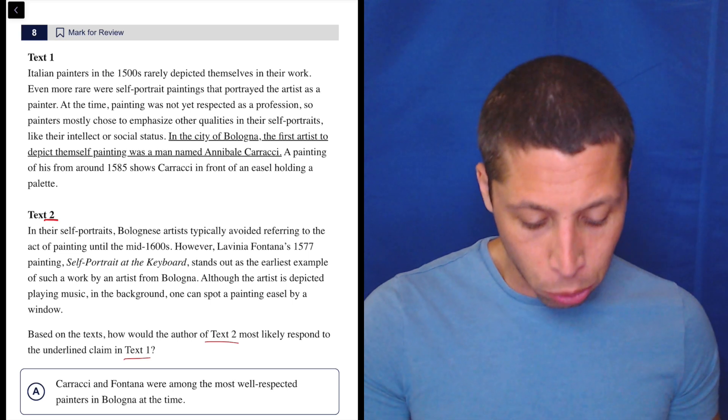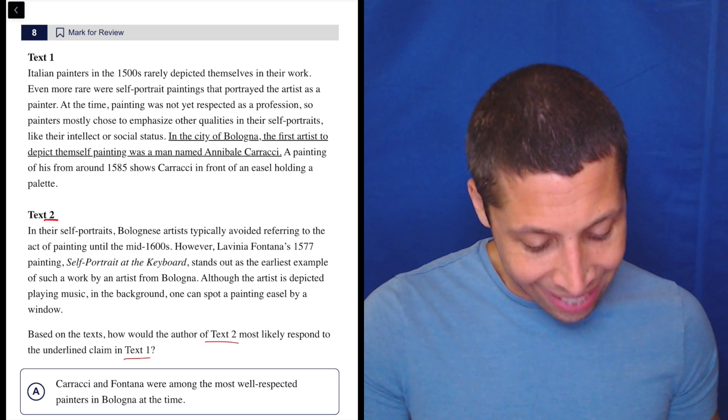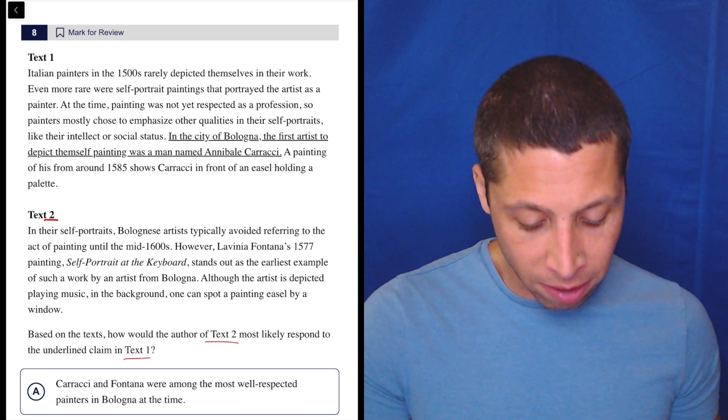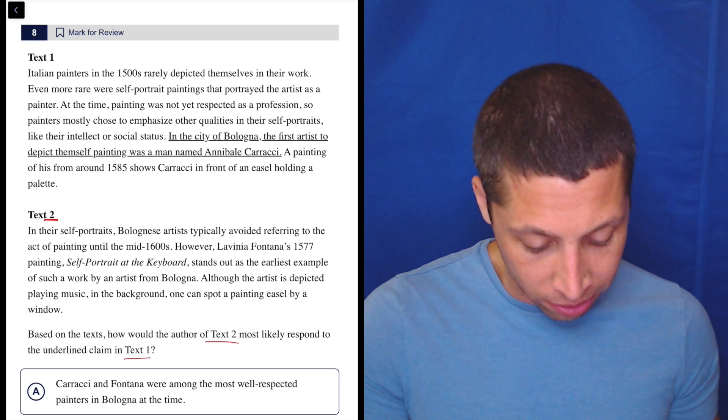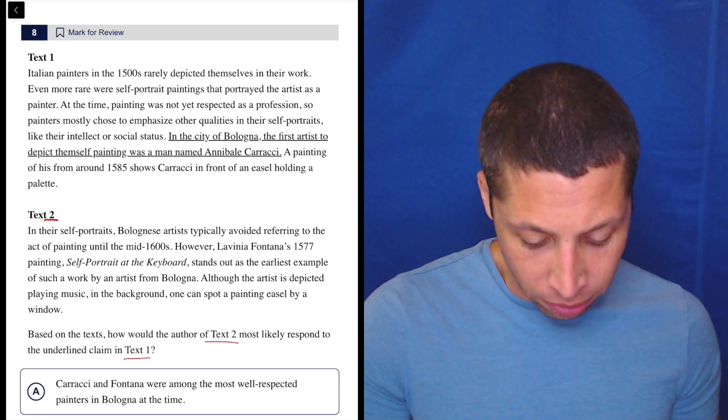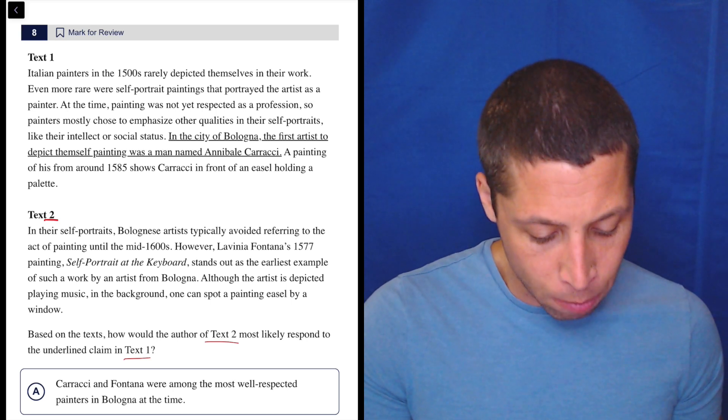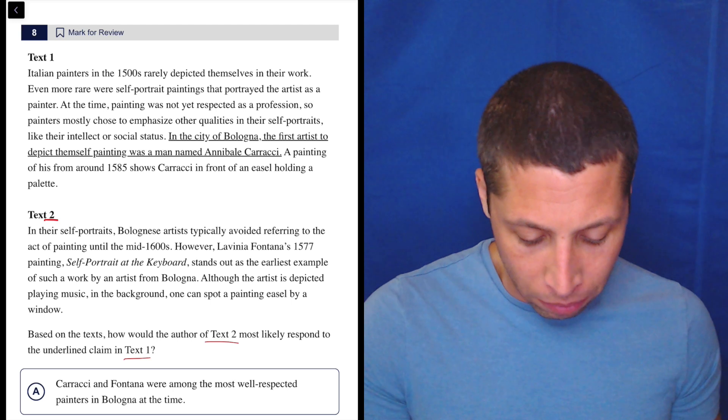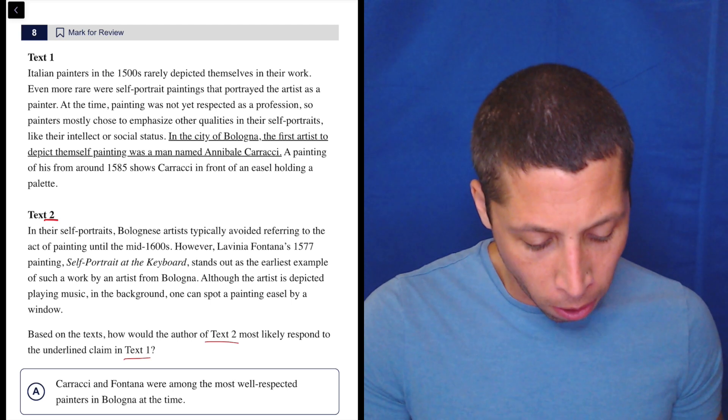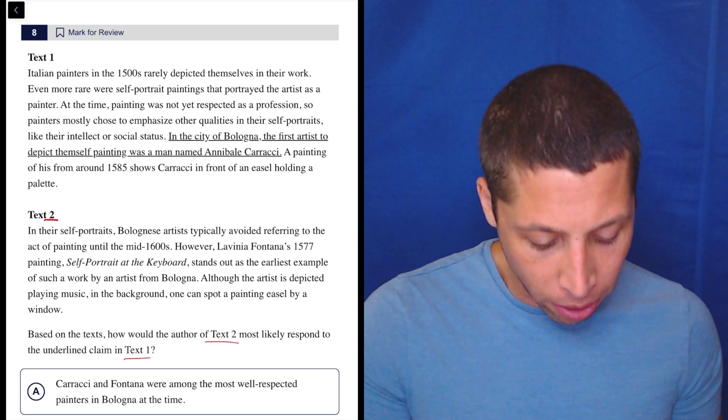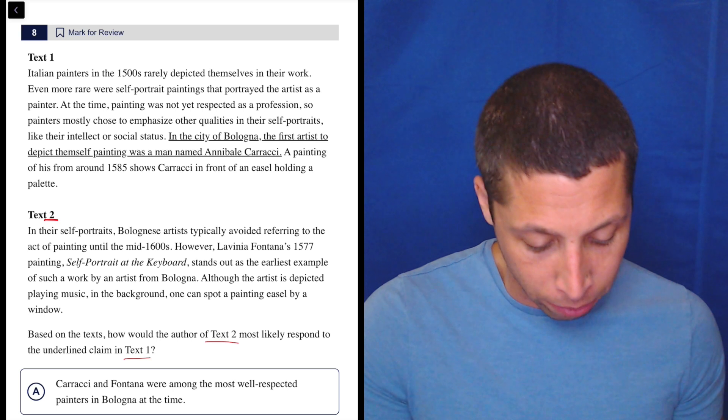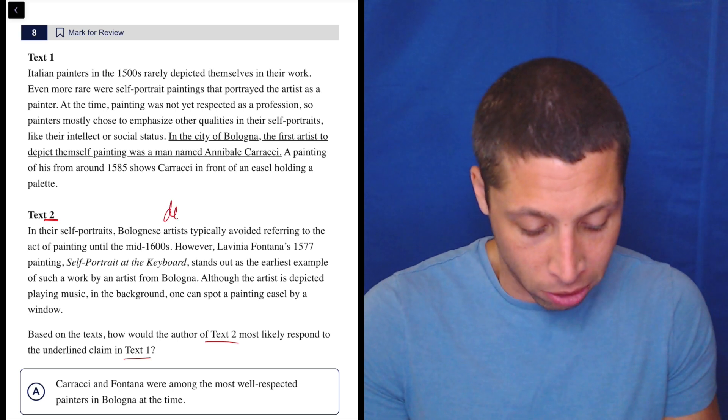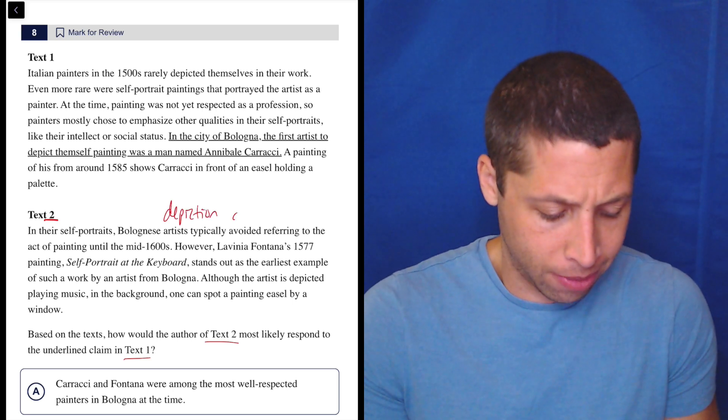Text two, in their self-portraits, Bolognese artists typically avoided referring to the act of painting until the mid-1600s. However, Lavinia Fontana's 1577 painting self-portrait at the keyboard stands out as the earliest example of such a work by an artist from Bologna. Although the artist is depicted playing music in the background, one can spot a painting easel by a window. Okay, so depiction of art, I guess. I don't know, of painting.